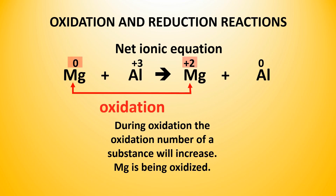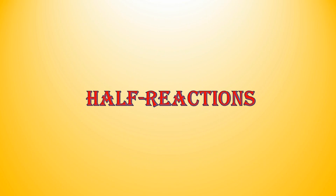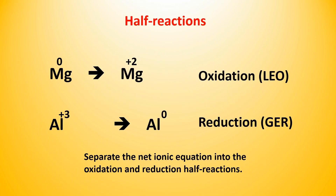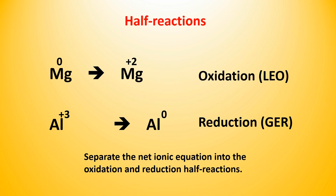During oxidation, the oxidation number of a substance will increase, so magnesium is being oxidized. And during reduction, the oxidation number of a substance will decrease, which means the Al plus 3 cation is undergoing reduction. After separating the net ionic equation into the oxidation half reaction and the reduction half reaction, we get: Mg 0 produces Mg plus 2, and Al plus 3 produces Al 0.